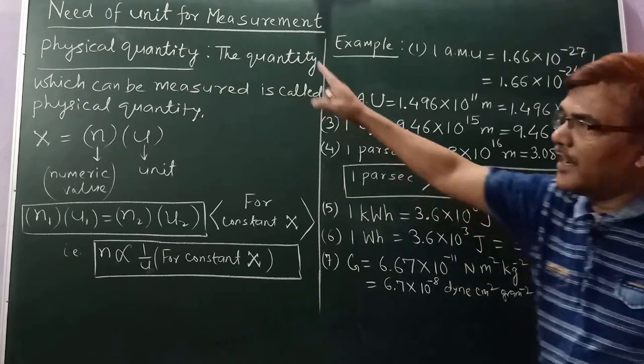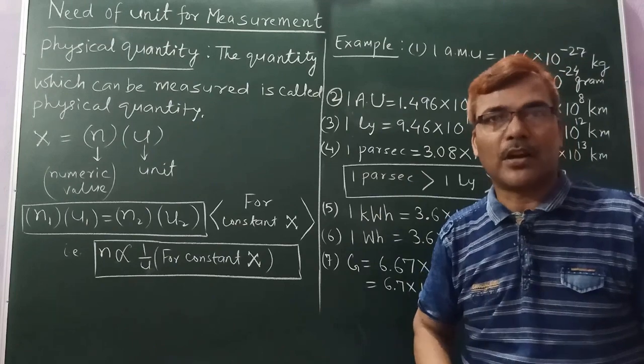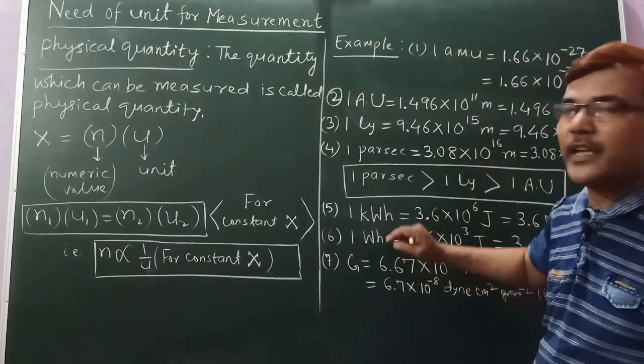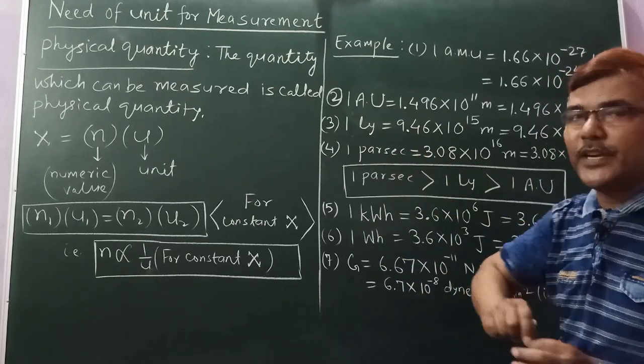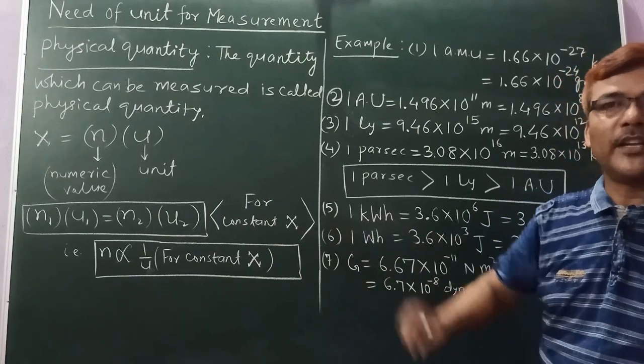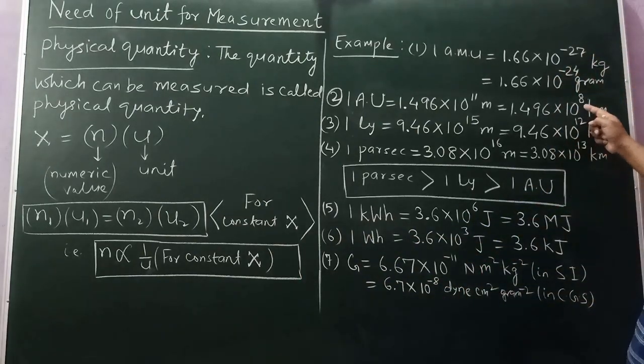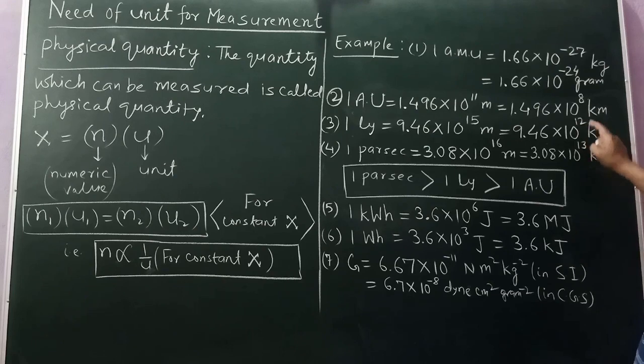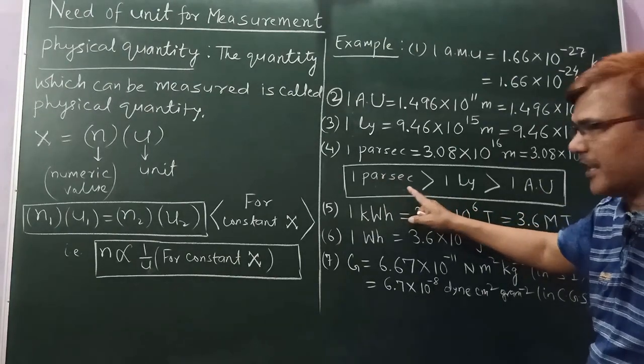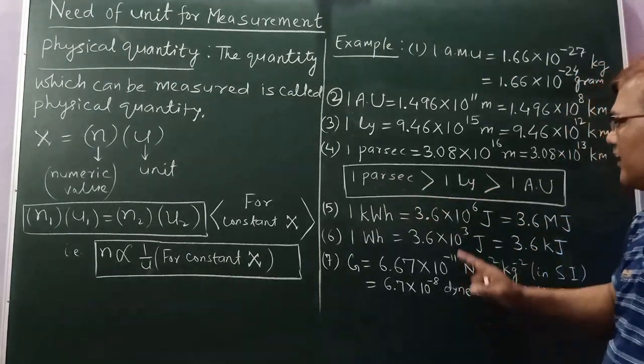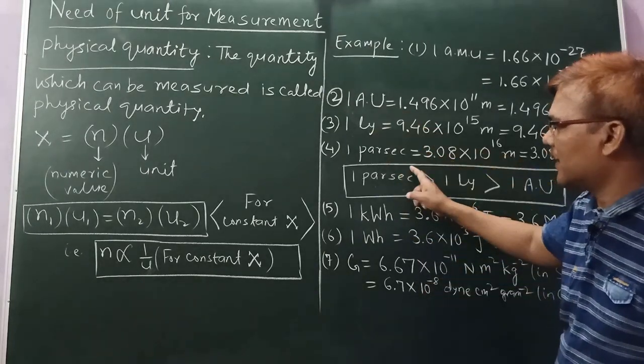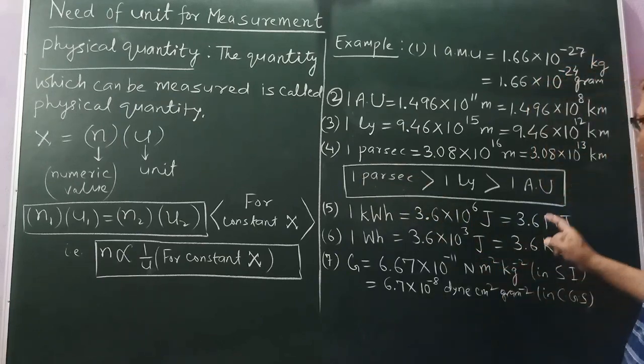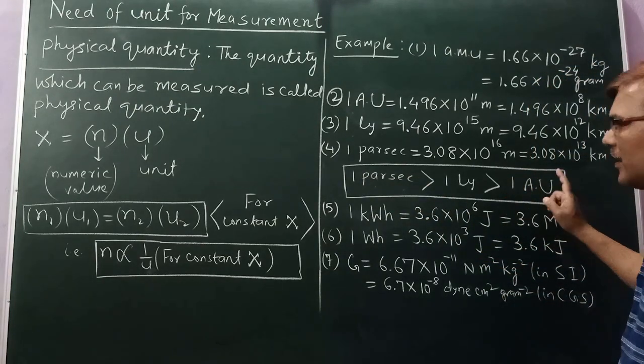One parsec is 3.08 into 10 to the power 16 meter, which can be written as 3.08 into 10 to the power 13 kilometer. This is not related to index, but I am explaining here because it is often asked which among these three is the biggest and which is the smallest. Astronomical unit is the smallest.